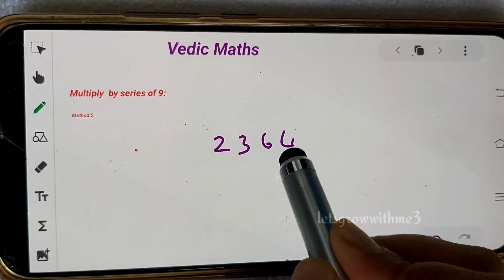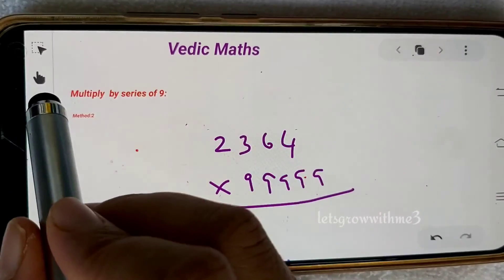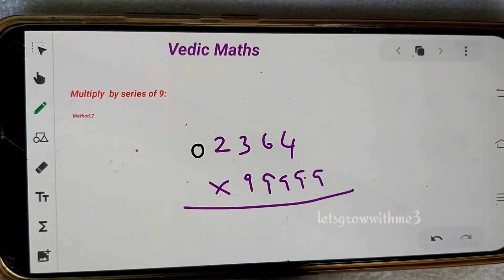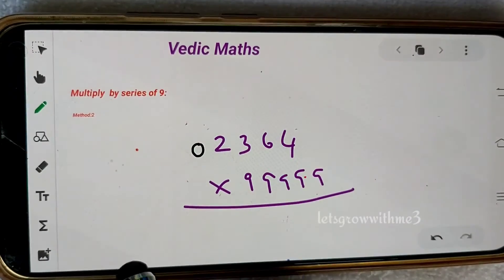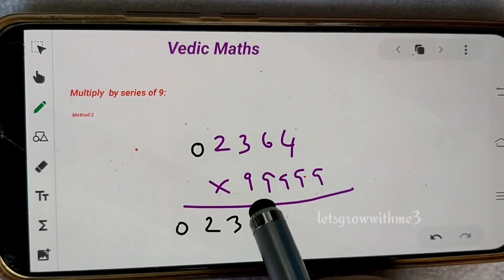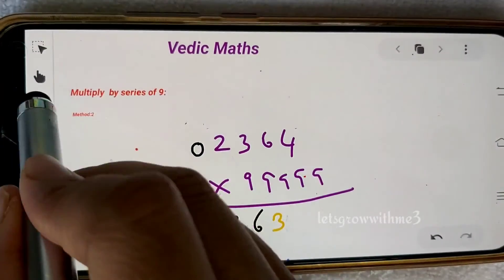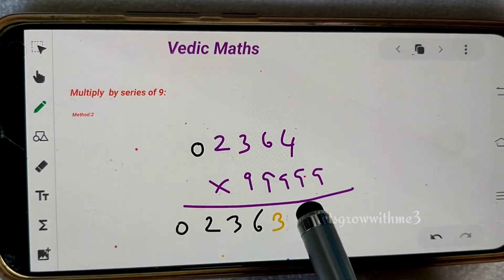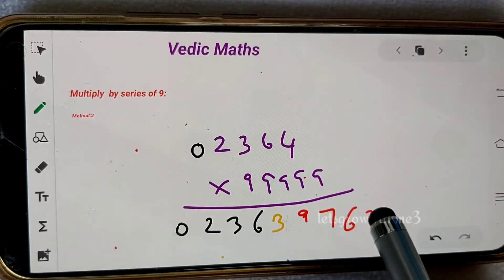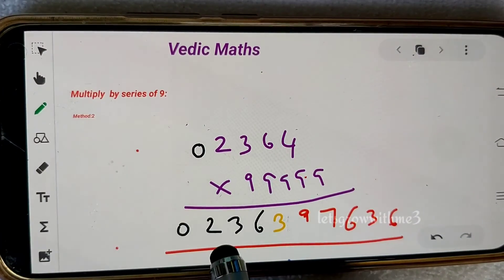02364 times 9999. Now I have five 9s, so I should have five digits in multiplicand. That's why I'm adding one more zero. Then let's do it: 02364 minus 1 is 3, and then we need to add: 9, 7, 6, 3, and then 6.